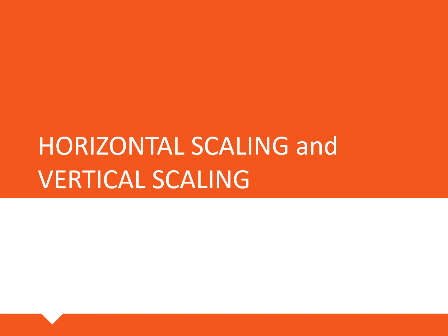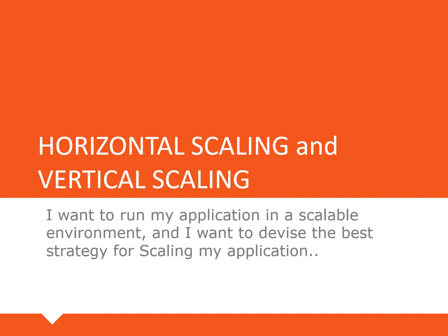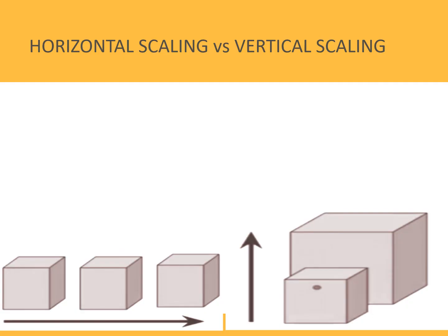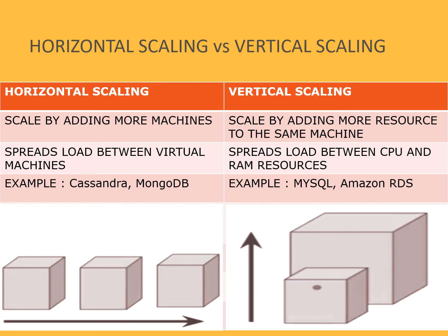Let's look at horizontal and vertical scaling in terms of cloud computing. If I want to run my application in a scalable environment, I need to devise the best strategy. Horizontal scaling means scaling by adding more machines or virtual machines to one cluster to support the ongoing workload. Vertical scaling means scaling by adding more resources to the same machine.